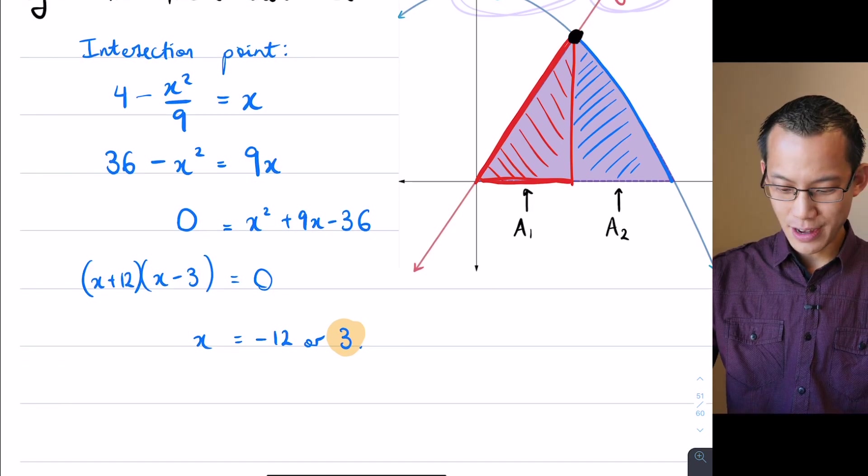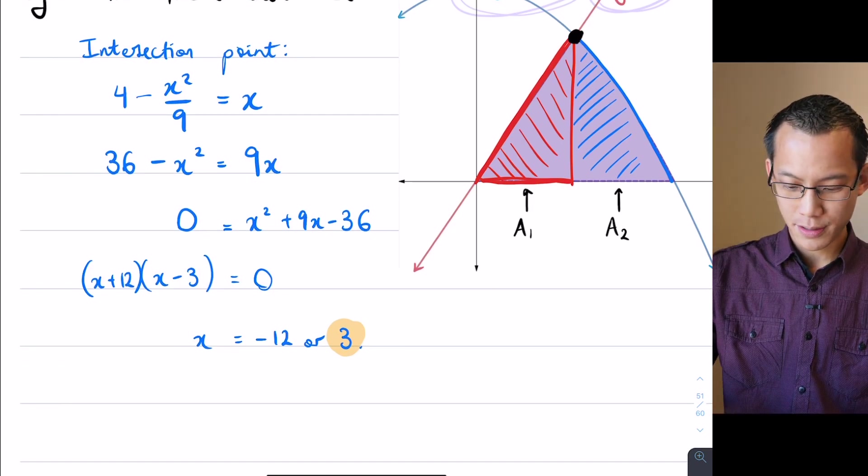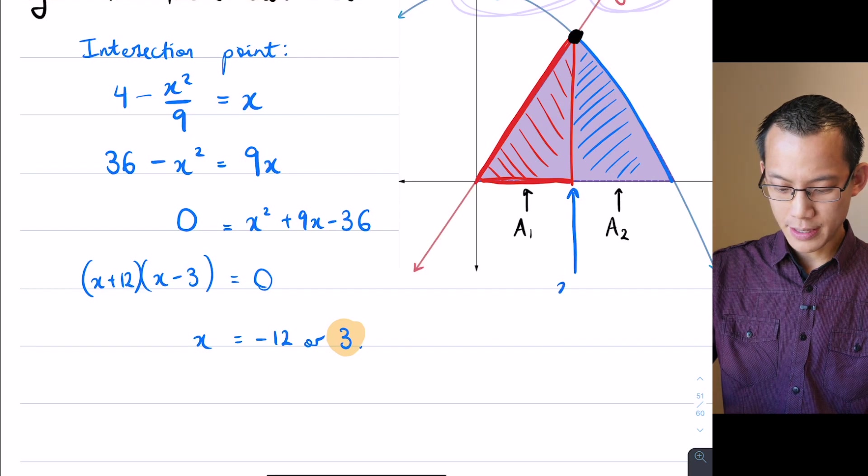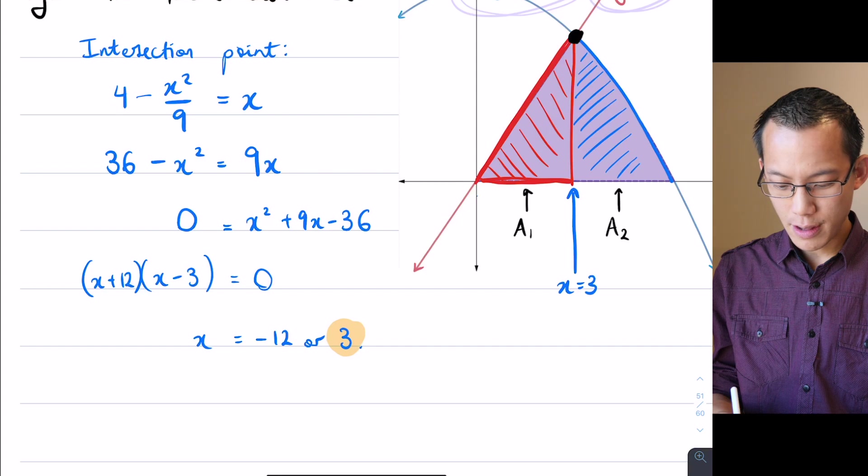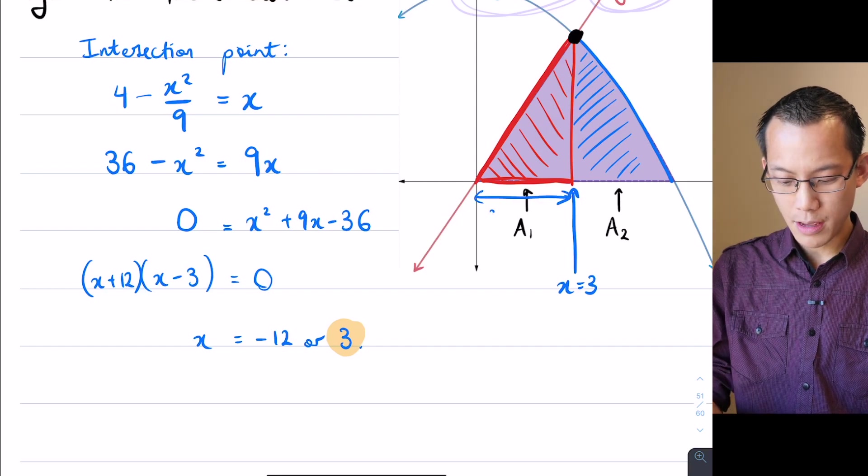I've now got an x value that corresponds to here. This is x equals 3, which means that the base of my triangle here is going to be 3.